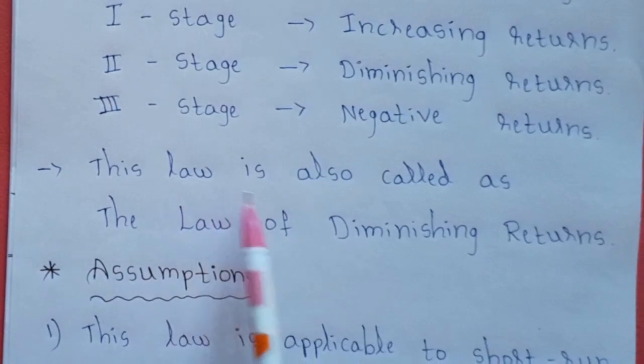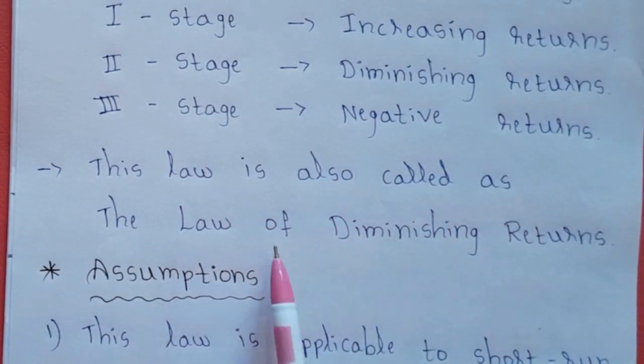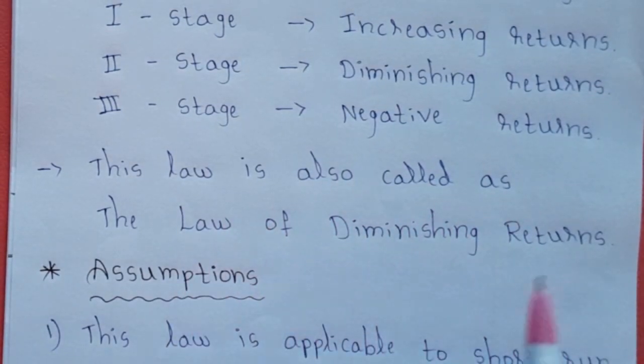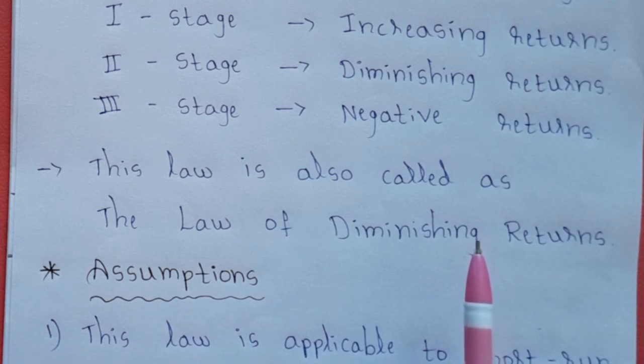This law is also called as the law of diminishing returns. The law of variable proportions is also known as the law of diminishing returns.